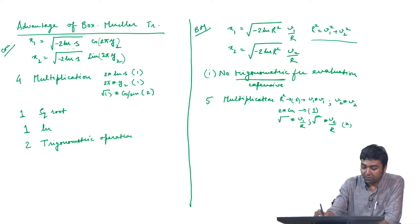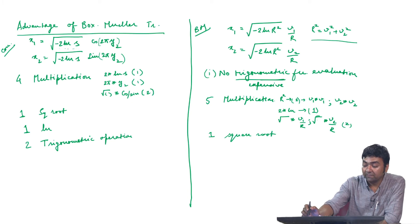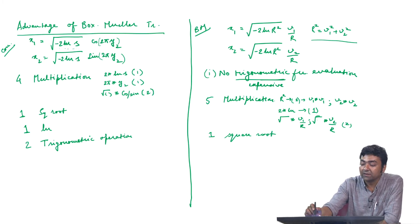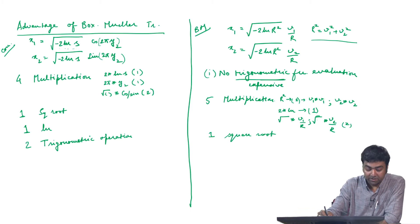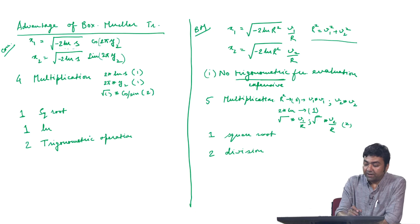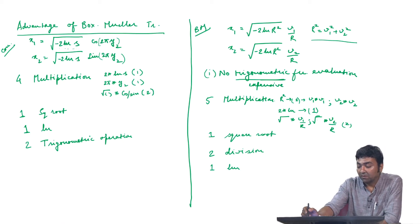The square root is the same as before — just one square root operation, since sqrt(-2 log r²) can be used in both x1 and x2. Additionally, we need 2 divisions to find v1/r and v2/r, and one logarithmic evaluation to compute log(r²).